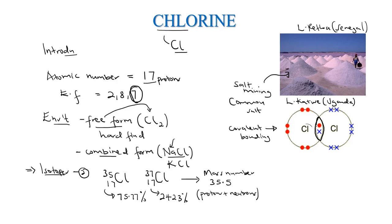In covalent bonding, two electrons are being shared by both chlorine atoms. You'll find that these two shared electrons imply that each atom tends to have a fully filled outermost energy level — 2, 8, 8 — because it gains an extra electron from the other counterpart. This is how chlorine bonds through covalent bonding.